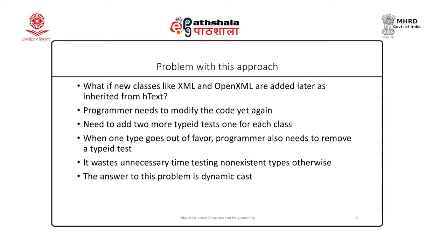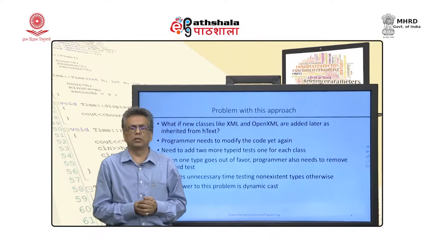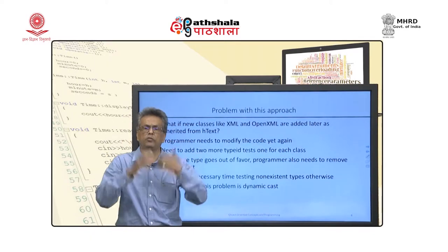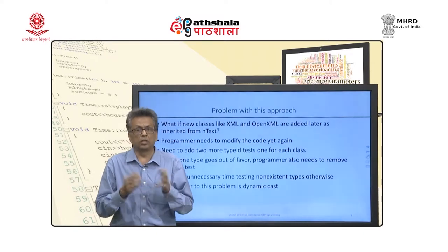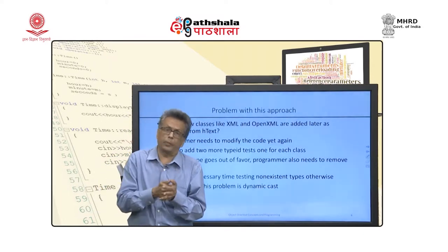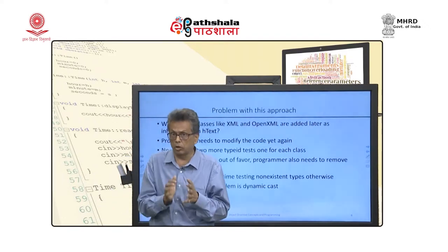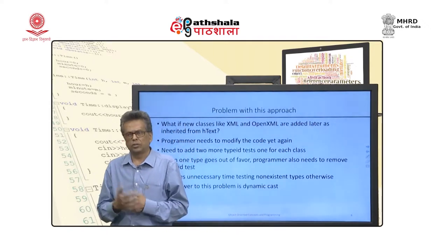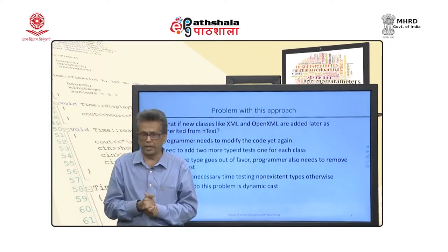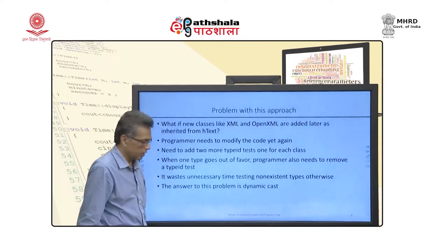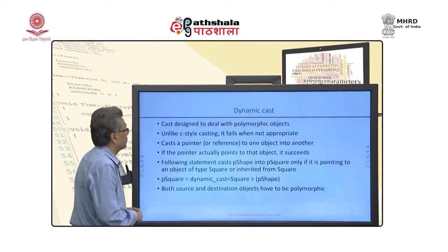The programmer needs to modify the code every time the hierarchy changes. When one type goes out of favor, if we do not remove that comparison it will still execute unnecessarily. Such alterations are always needed in the code, which is not a good thing. Dynamic cast is the answer to that problem.